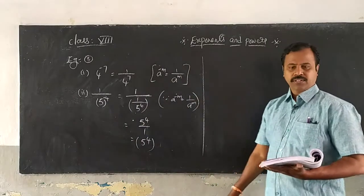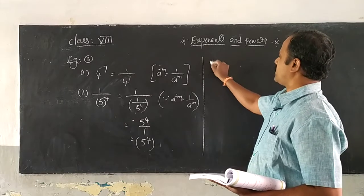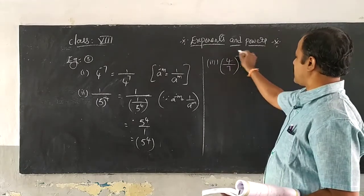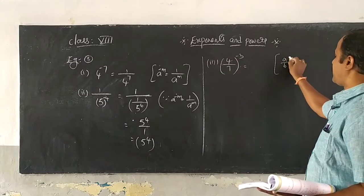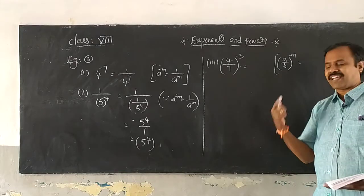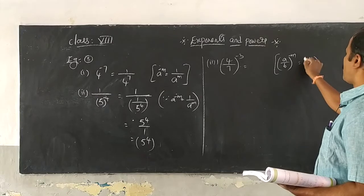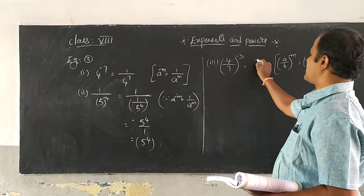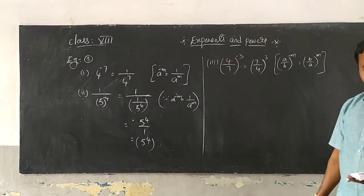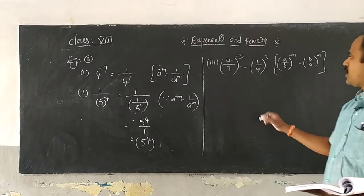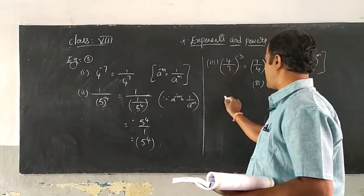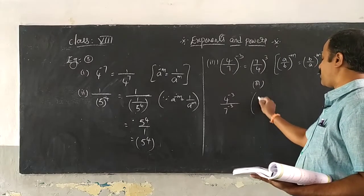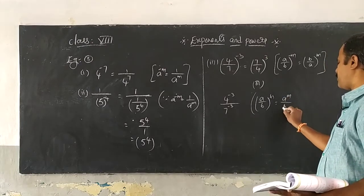Coming to the third question: 4 upon 7 whole power minus 3. Here the formula is: a by b whole to the power of minus m equals b by a whole to the power of m — the fraction is reversed and the power becomes positive. So this becomes 7 upon 4 whole to the power of 3. You can directly use the formula, or distribute it as 4 power minus 3 by 7 power minus 3, using the formula a by b whole power m equals a power m upon b power m.